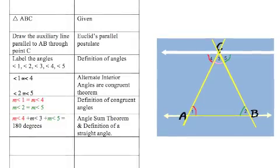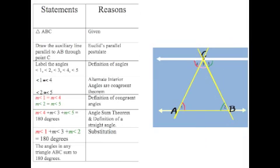This is where substitution comes into play. We know that angle 1 is the same as angle 4, and angle 2 is the same as angle 5. So we can substitute angle 1 for angle 4, and angle 2 for angle 5. Now we have angle 1, angle 3, and angle 2 all adding up to 180 degrees. We've proved that the angles in a triangle add up to 180 degrees.